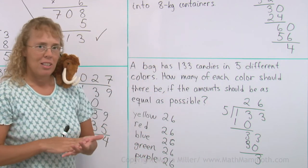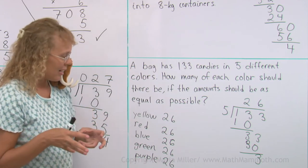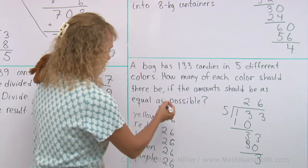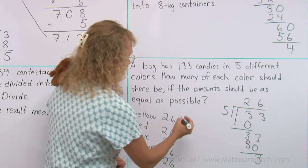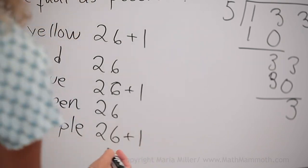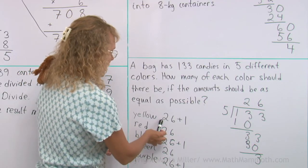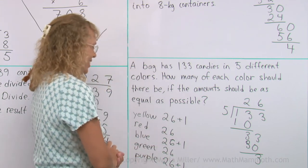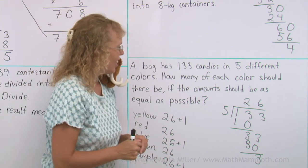So, if you need to have 133 candies in that bag, then you still have three more candies. And so, you cannot make it exactly even, but you need to add one candy, those three candies, I should say, somewhere. So, you would actually get 27, 27, 27, 26 and 26 of all those colors.